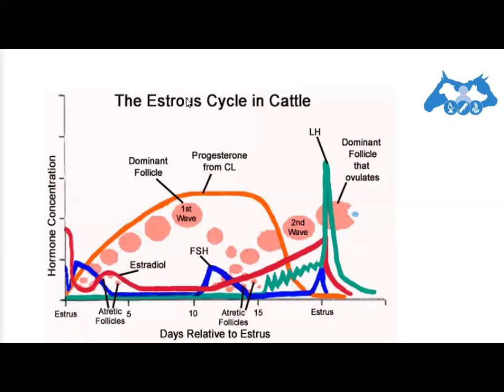The length of the estrous cycle in cows and buffalos is 20 to 21 days, while ewes have a shorter estrous cycle averaging between 16 and 17 days. Along with these physiological and hormonal changes there are also different behavioral changes, which we can discuss as signs of estrus.